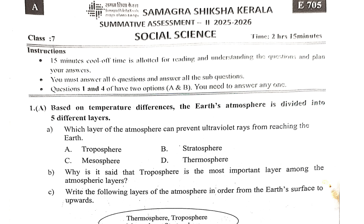If you look at the temperature difference, the earth's atmosphere is divided into 5 different layers. Which layer of the atmosphere can prevent ultraviolet rays from reaching the earth? The answer is the stratosphere and ozone layer, which protects against UV rays.